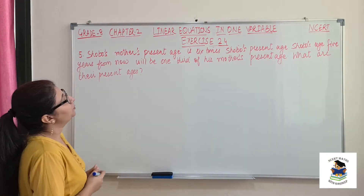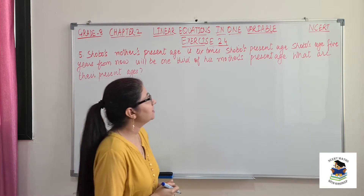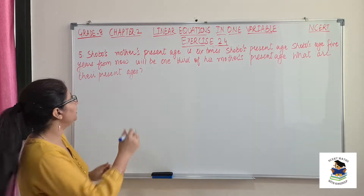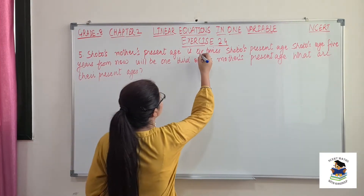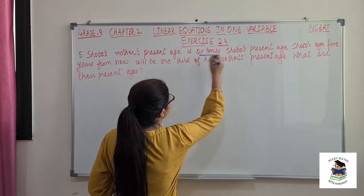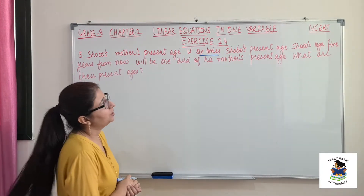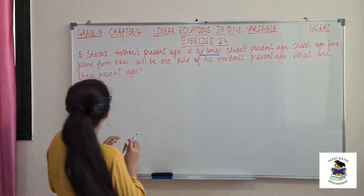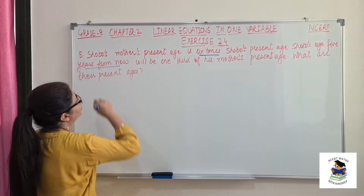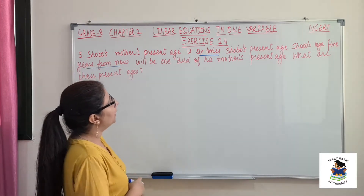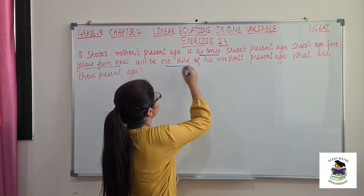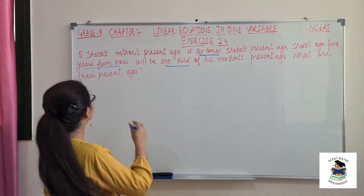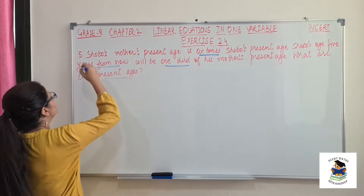Shobo's mother's present age is 6 times Shobo's present age. Shobo's age 5 years from now will be one third of his mother's present age. So what are their present ages?